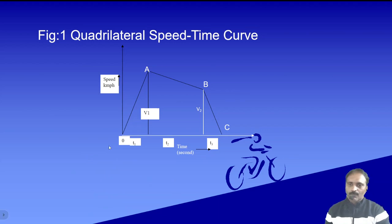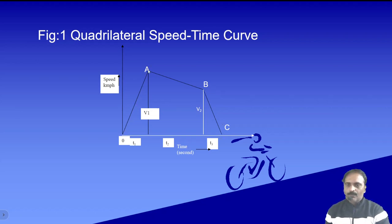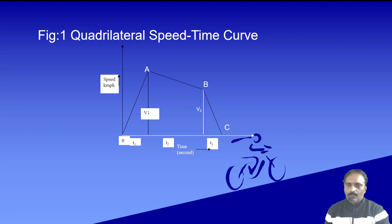In the quadrilateral speed-time curve we have three parts: from O to A is the accelerating period, from A to B is the coasting retardation, and from B to C is the retardation period. The acceleration period is similar to what we discussed in the case of the trapezoidal speed-time curve. At the end of A, after the duration of time t1, the vehicle reaches its maximum speed.